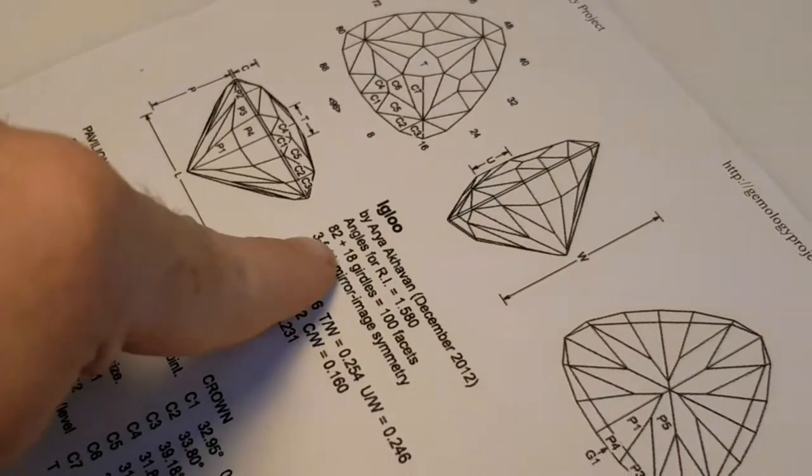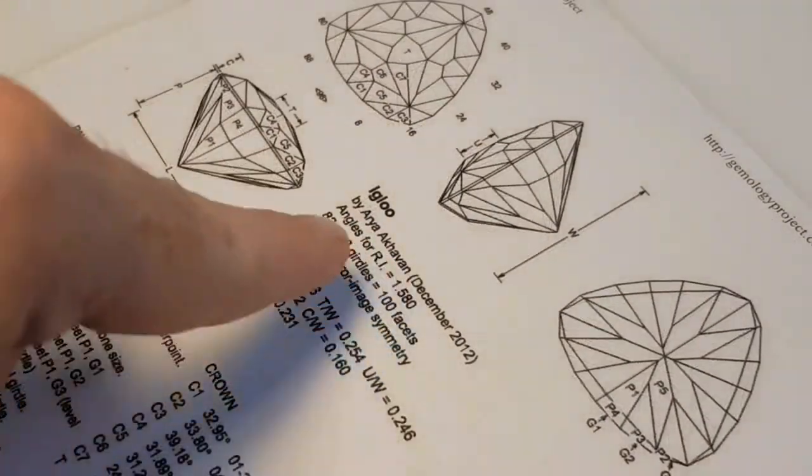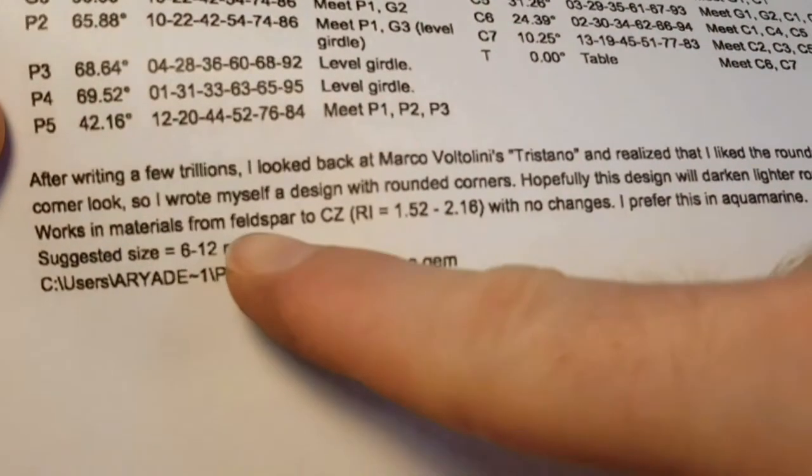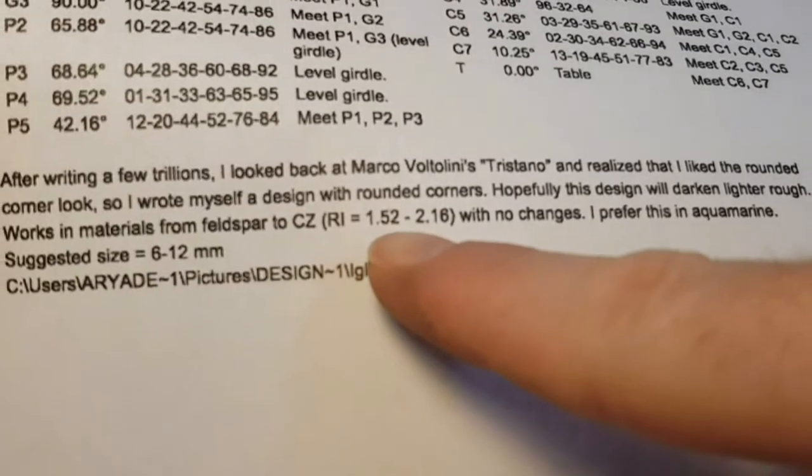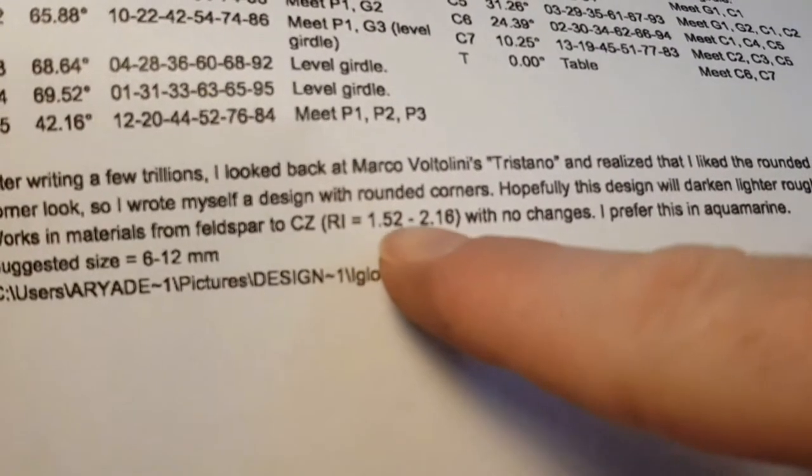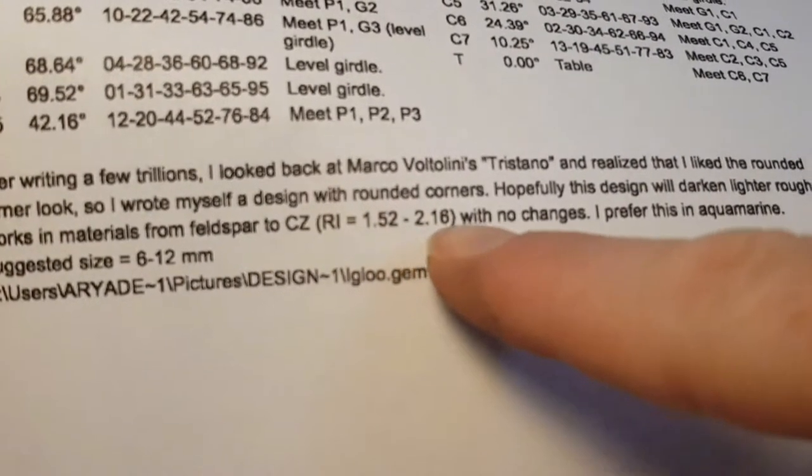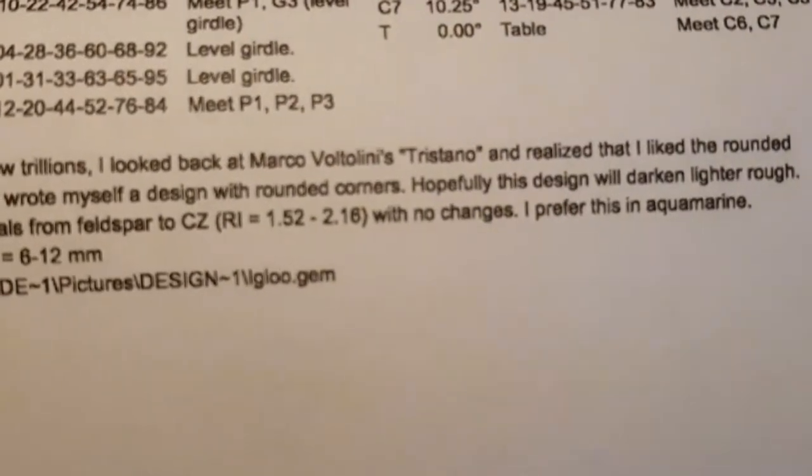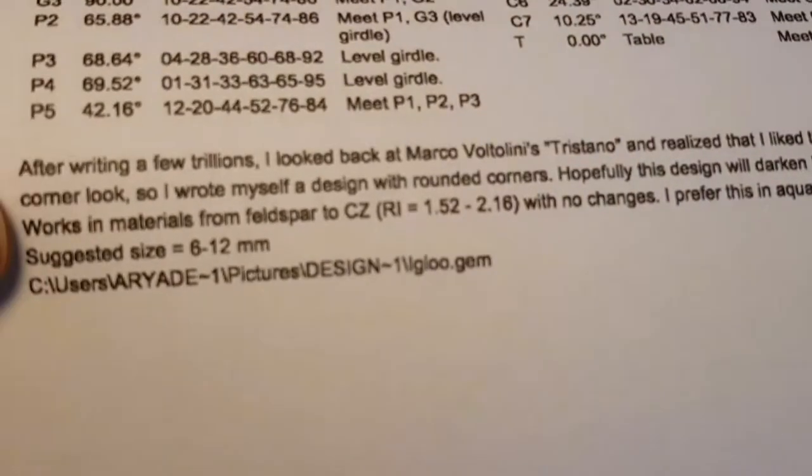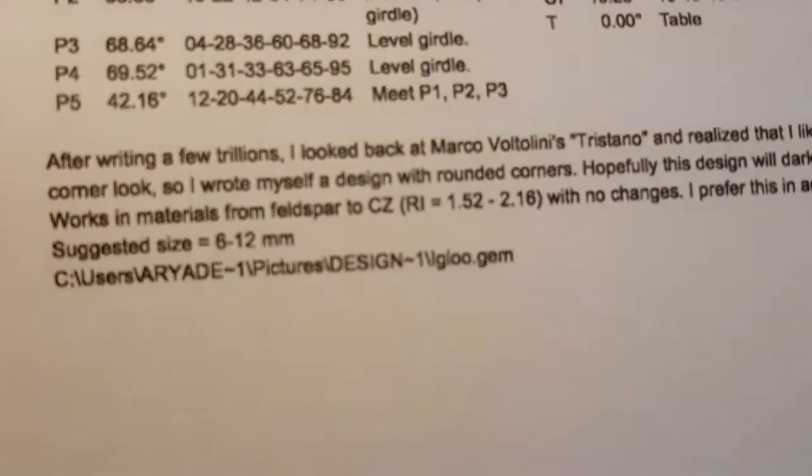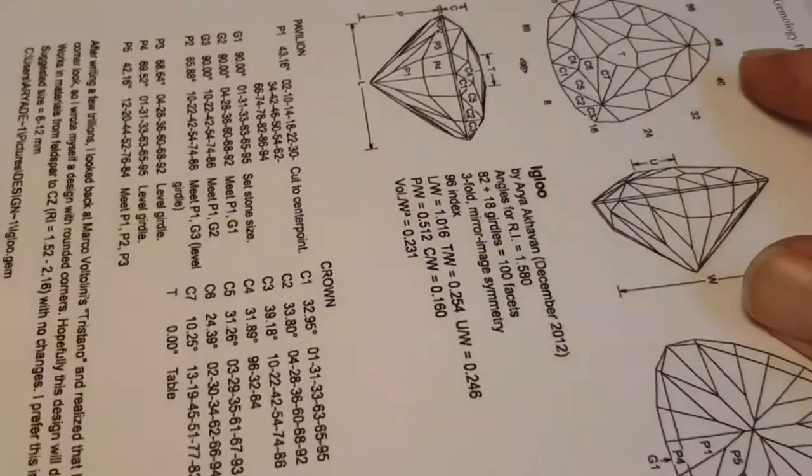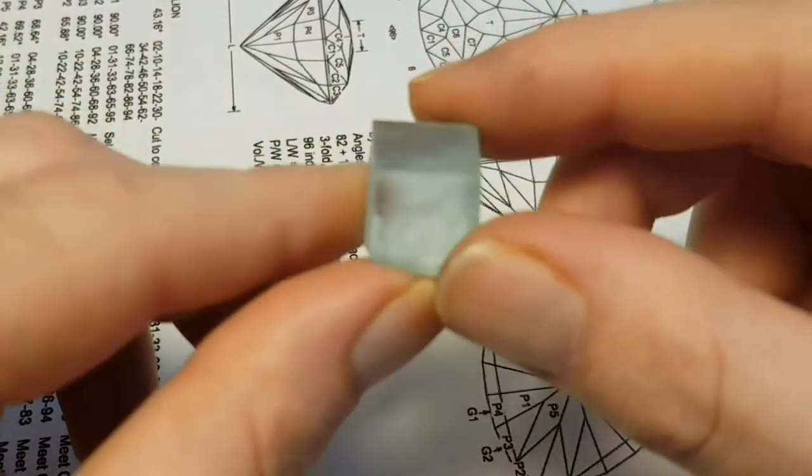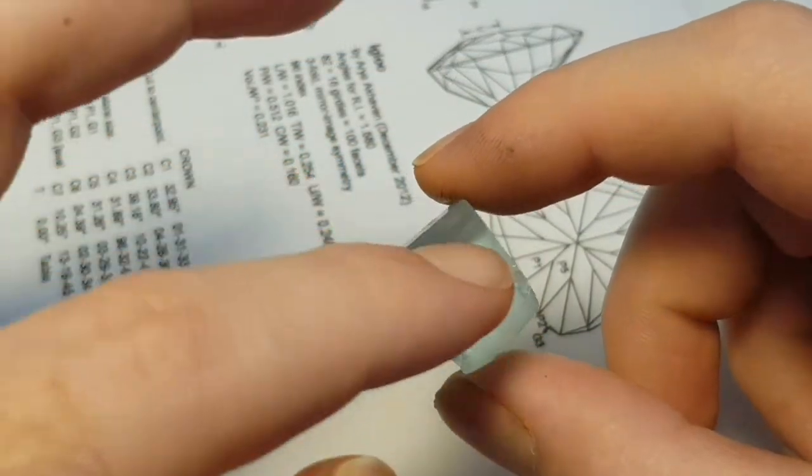In the background you can see the design I will use. It is by Aria Akavan called Igloo and it's optimized for aquamarine, but works from feldspar to cubic zirconia, which means from refractive index 1.52 to 2.16 without any changes. Aria preferred it to cut in aqua with a suggested size from 6 to 12 millimeters, so this piece of aquamarine is perfect.